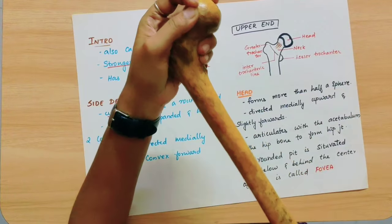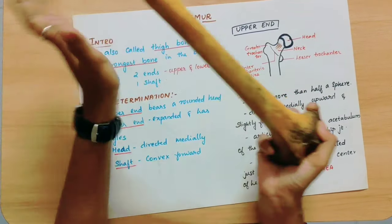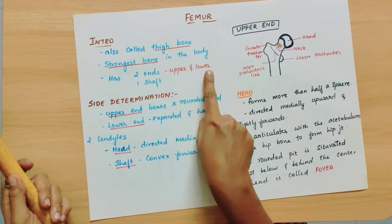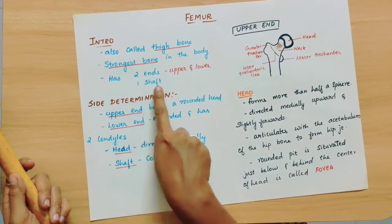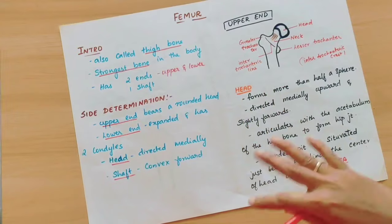This is the upper end, this is the lower end, and this is the shaft. It has two ends — upper and lower — and one shaft. This is the introduction.